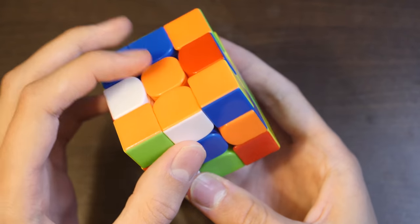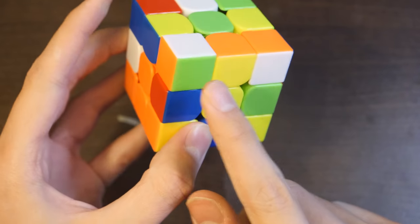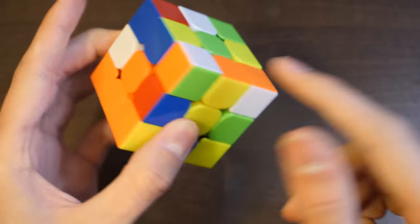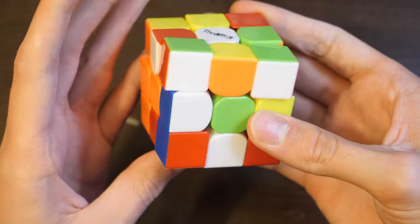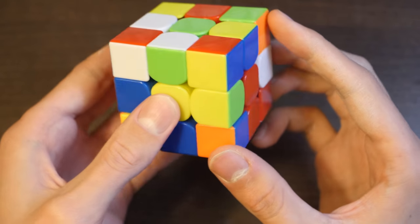For the first solve, Sean did the orange-white block. He has his pieces here and here. He's going to solve the orange-green in the back by moving it like this, and then he's got these two in the front to finish the first block.